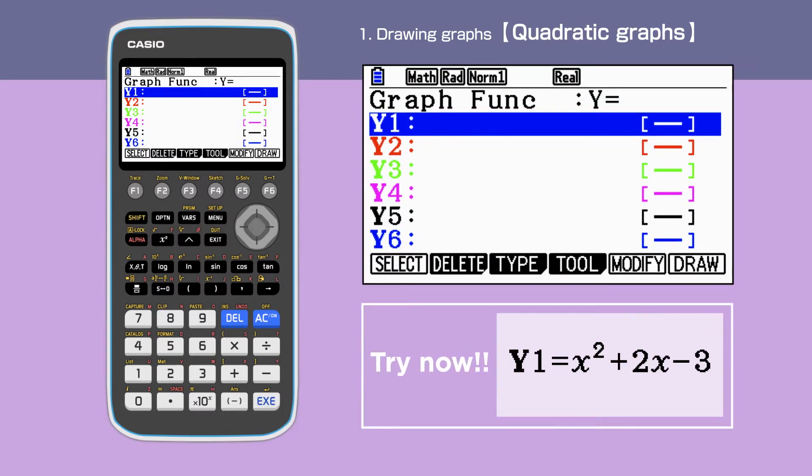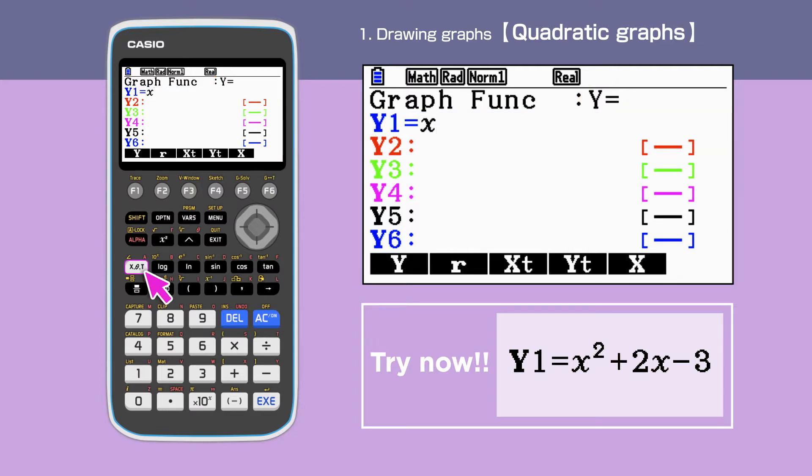First, we are going to draw a quadratic graph. Check that the graph function shows y equals, then enter the equation y1 equals x squared plus 2x minus 3.